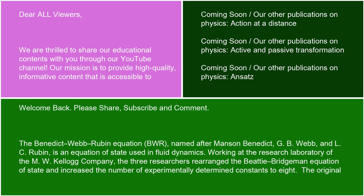The Benedict-Webb-Rubin equation (BWR), named after Manson Benedict, G.B. Webb, and L.C. Rubin, is an equation of state used in fluid dynamics. Working at the research laboratory of the M.W. Kellogg Company, the three researchers rearranged the Beattie-Bridgeman equation of state and increased the number of experimentally determined constants to 8.